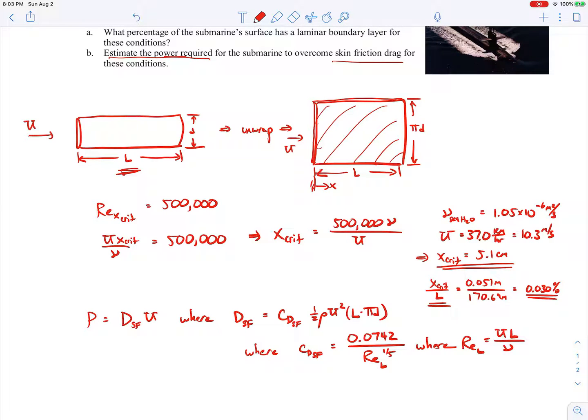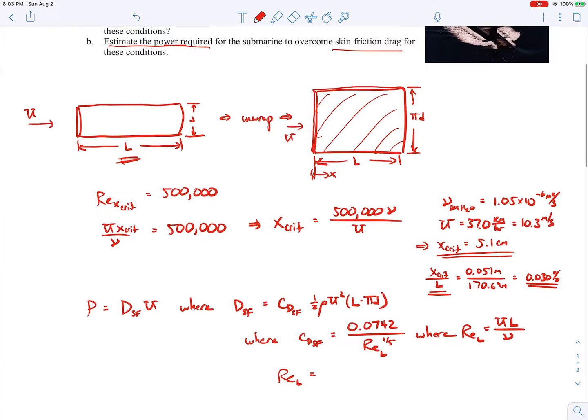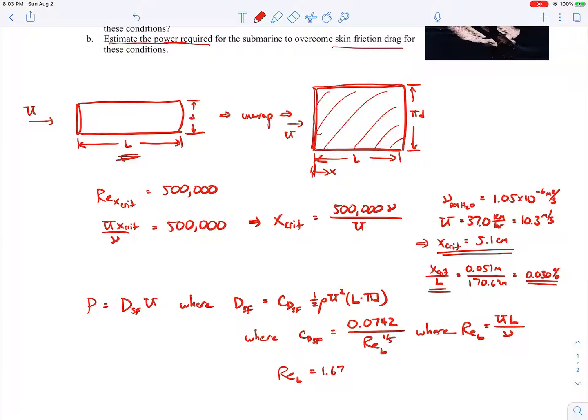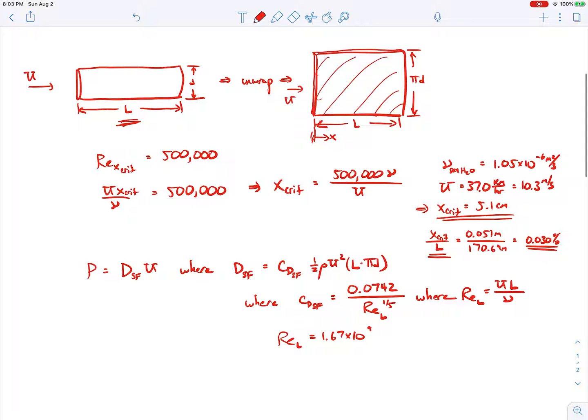So we can go ahead and plug in the values that we have here. And if you do that, you'll find that the Reynolds number at the end of the submarine is a pretty big number: it's 1.67 times 10 to the ninth, clearly turbulent at the end. And then we can plug that Reynolds number in to find the drag coefficient, and then plug that drag coefficient up here to find the total drag. So the skin friction drag is 3.96 times 10 to the fifth newtons, which is about 89,000 pounds of force.